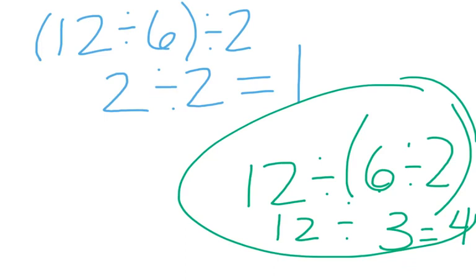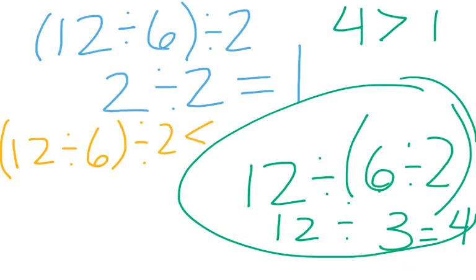So another way you can write this is, you can do this: 4 is greater than 1. I would accept that. Or you can write out the entire equation and write 12 divided by 6 divided by 2 is less than, and you can write this one right next to it. Either one would be the right answer.